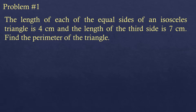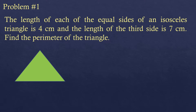First we are going to illustrate the problem. It is talking about an isosceles triangle — a triangle where two sides are equal and one side is not equal to the other two. In this case the two equal sides are four centimeters each. The third side is seven centimeters, not four, because if all sides were four it would be equilateral, not isosceles.